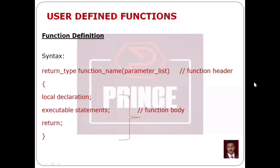First, the return type — the declaration is the same. Then, the function name is written, followed by parentheses which contain the parameter list. This comprises the function header.